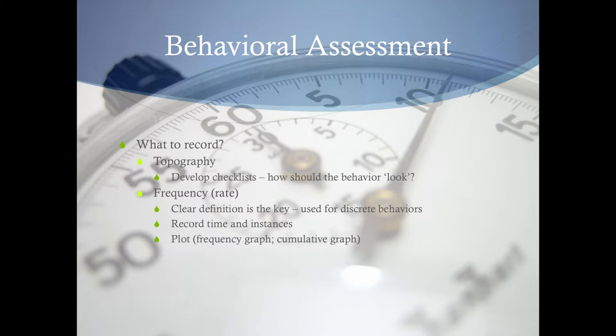You can use a frequency graph - a line chart - or a cumulative graph. A cumulative graph is where the behavior happened once, and the next time it happens you go up to level two on the y-axis, then three, then four - this allows you to get a rate on a piece of paper. A frequency graph just shows how many times the behavior happened at each measurement, without adding to the previous one.